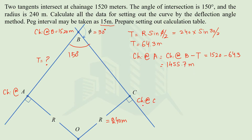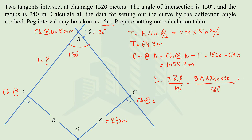Next, we calculate the chainage at point C, the end point of the curve, using the length of the curve formula: πRΔ/180. With the known values, the length of the curve comes out to 135.6 meters. Adding this to the chainage at point A gives us the chainage at point C: 1455.7 + 135.6 = 1581.3 meters.